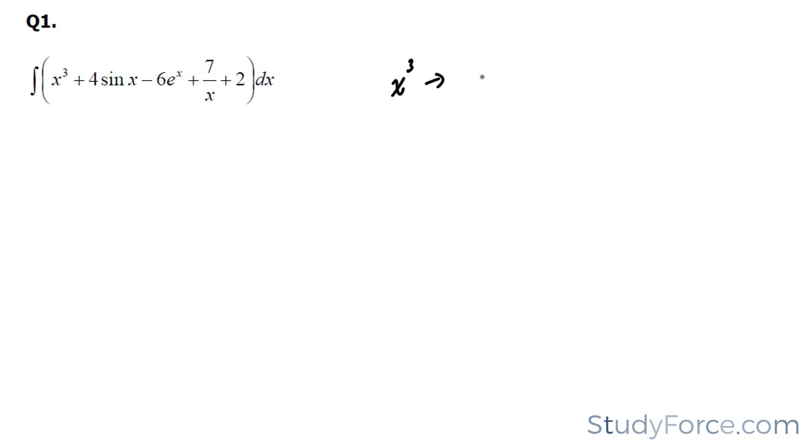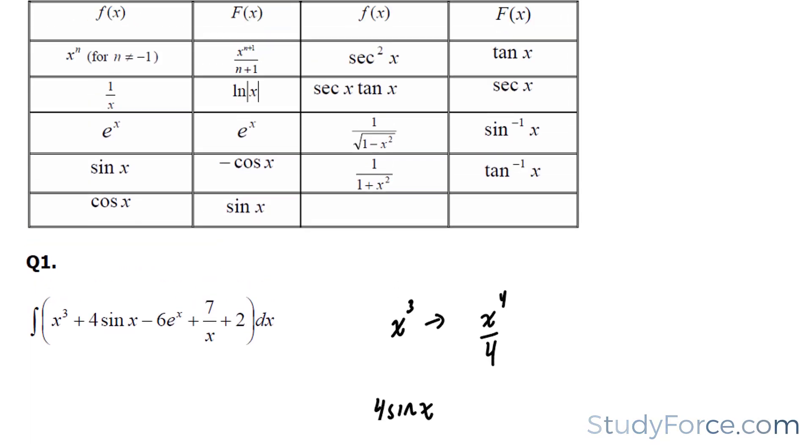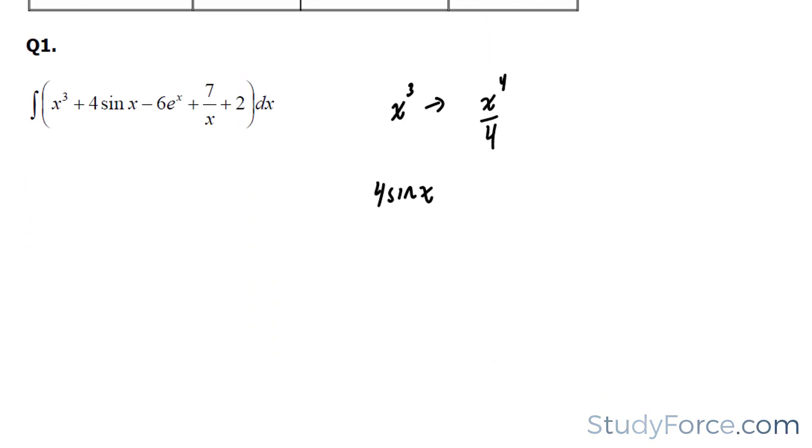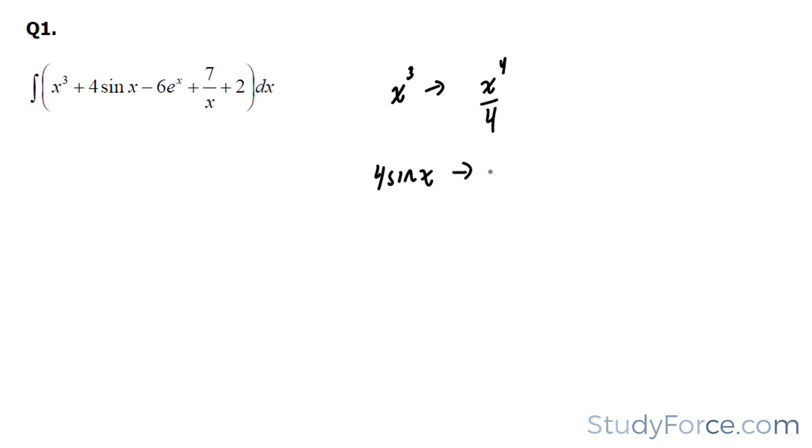x to the power of 3 becomes x to the power of 4 over 4. Moving on to 4 sine x. Now in order to find the antiderivative of sine x, we use this handy table, and it tells us that the antiderivative of sine x is equal to negative cosine x. So our answer becomes negative 4 cosine x.